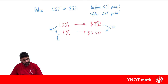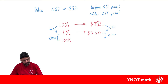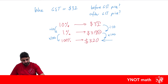Now we can find 100% by multiplying by 100. We do the same thing on this side. 1 times 100 gives us our 100%, and $3.20 times 100 — move the decimal place back two places to the right — and we get $320. This is the price before GST is added, which makes sense because 10% of 320 is 32.